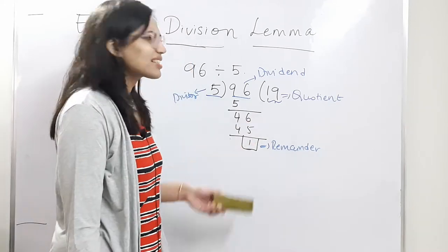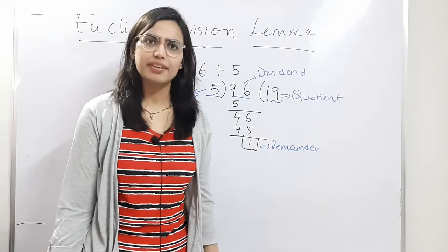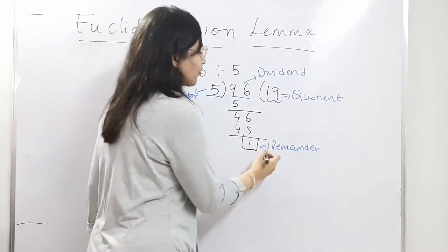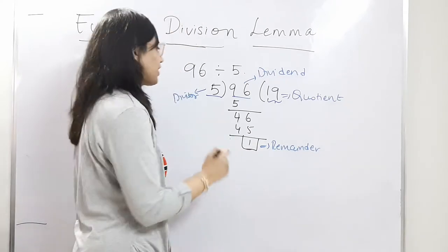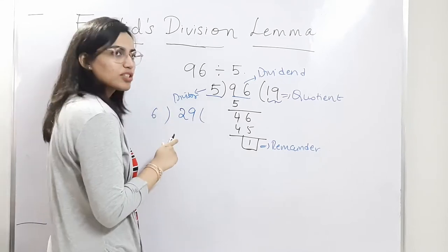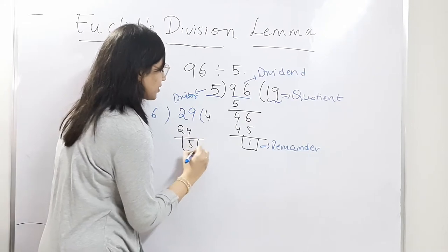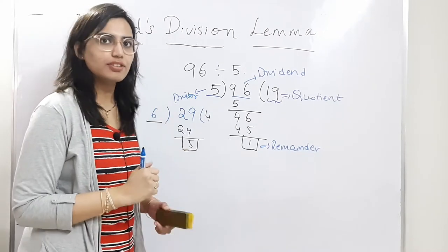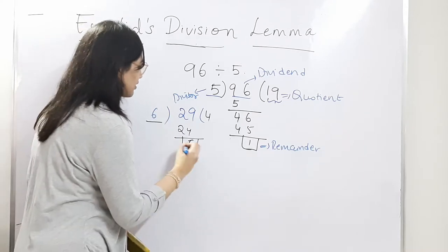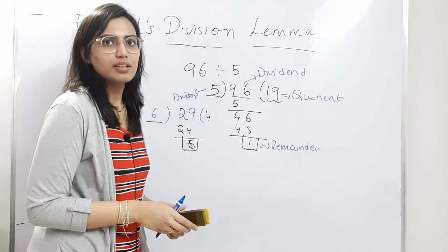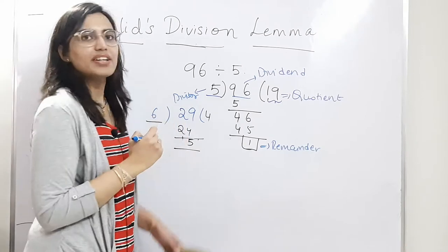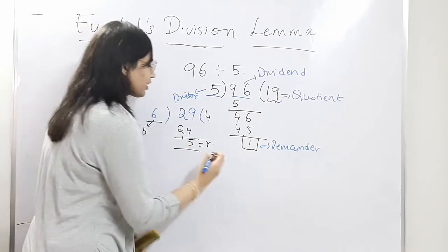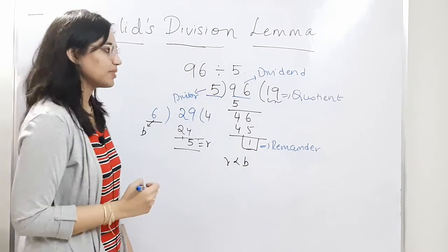This is the same method you use to divide any other numbers. However, there is one observation that you usually tend to miss: whenever you get the remainder, it is always less than the divisor. For example, dividing 29 by 6 — we know 6 × 4 = 24, so remainder is 5. In both cases, the remainder is less than the divisor. It cannot be equal either. If the remainder were 6, we would divide once more. So the remainder R is always less than divisor B, meaning R < B.